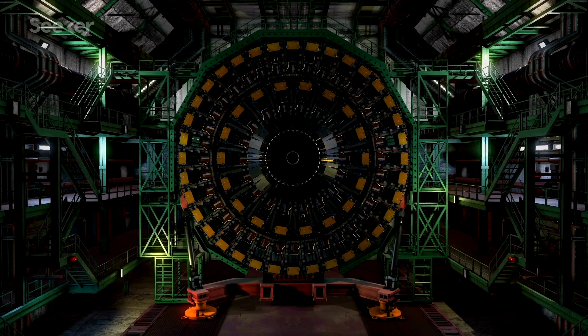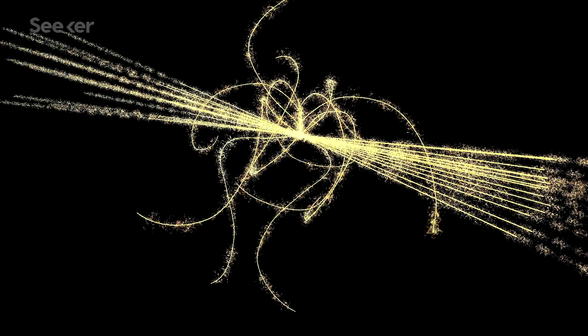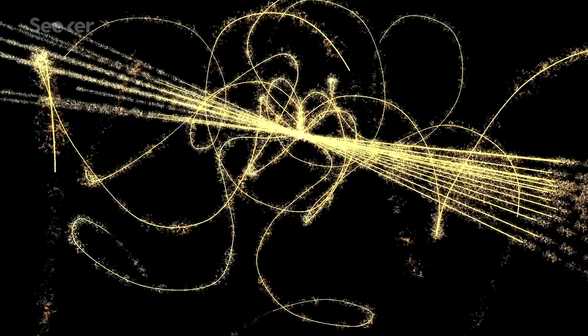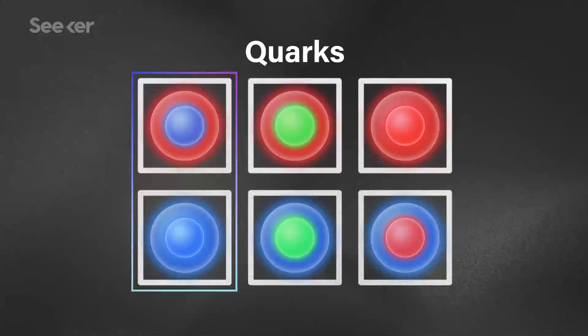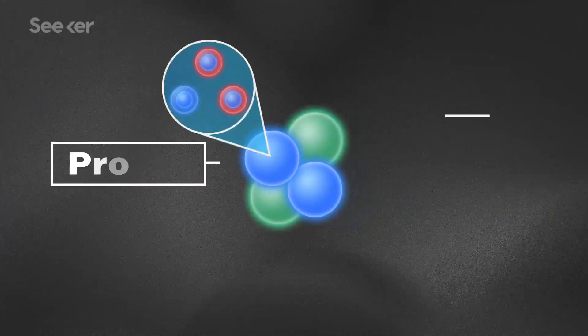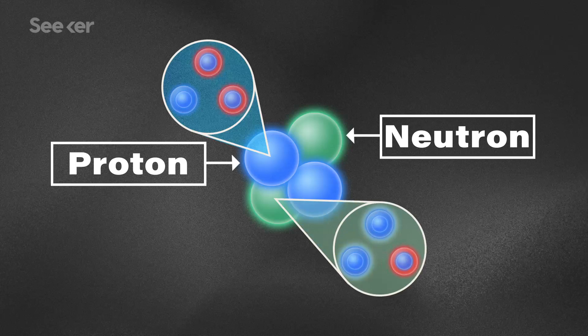But how? Well many other colliders around the world smash atoms of different elements together at nearly the speed of light. These kinds of experiments can let us take a closer look at the component parts of atoms, including their quarks, and quarks are the elementary particles inside protons and neutrons.